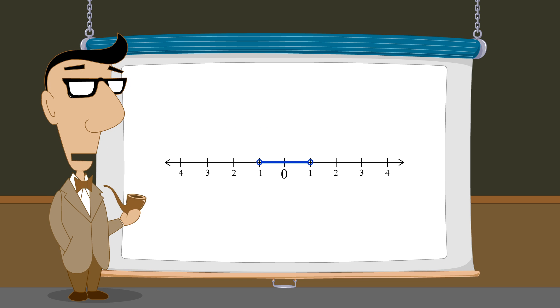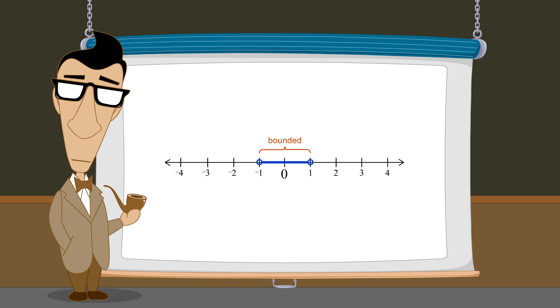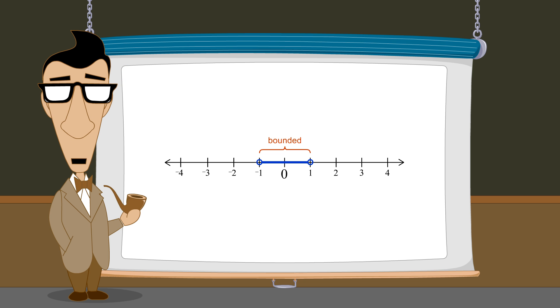However, regardless of whether an interval's endpoints are included or excluded, they still bound the interval to a finite length on the number line. But what if an interval has no upper or lower bound?